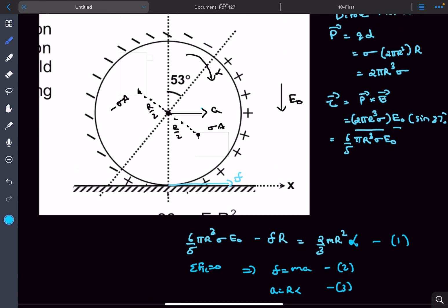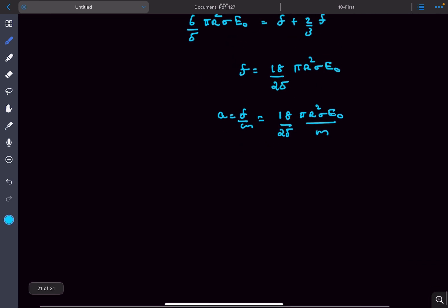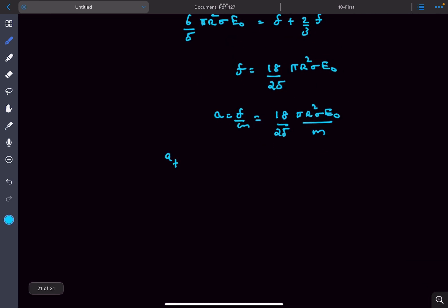In rolling motion, the center moves with acceleration a, and the topmost point has acceleration a + Rα. Since Rα = a, the net acceleration is 2a. The acceleration at the topmost point is 36/25 πR²σE₀/m.